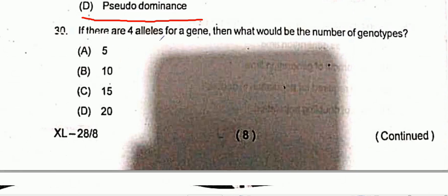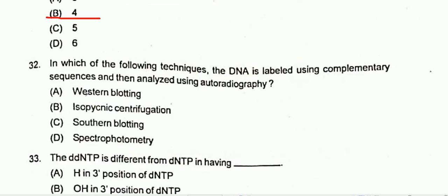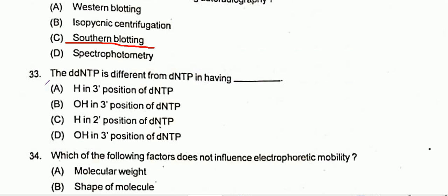Question 30: If there are four alleles for a gene, the number of genotypes would be 10. Option B is correct. Question 31: DNA is digested by endonucleases at four sites, giving rise to fragments of which two are equal in length. After electrophoresis, four bands would be seen. Question 32: In which technique is DNA labeled using complementary sequences and analyzed using autoradiography? The answer is Southern blotting. Option C is correct. Question 33: ddNTP differs from dNTP in having H at the 3′ position. Option A is correct.